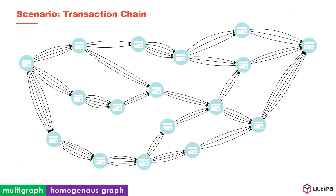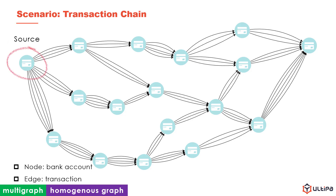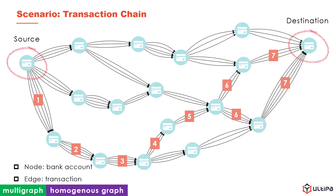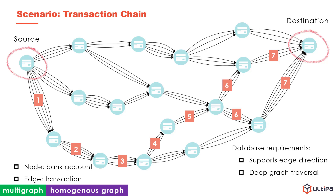This is a homogeneous graph as there is only one type of nodes which represent bank accounts, and one type of edges representing transactions between accounts. This is also a multi-graph as multiple transactions exist between two accounts. This graph shows transaction chains from the source account to the destination, and the longest chain contains up to seven steps via six intermediary accounts. To abstract such long chains from a network, we need a graph system that supports edge direction with the capability of deep graph traversal.